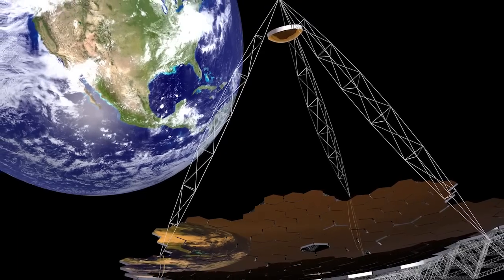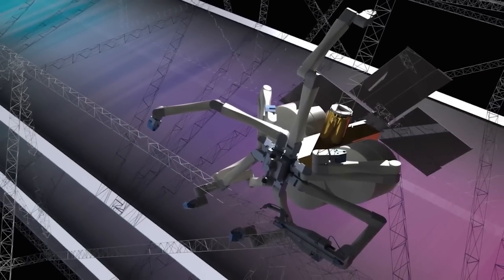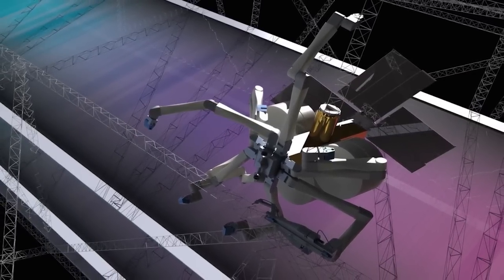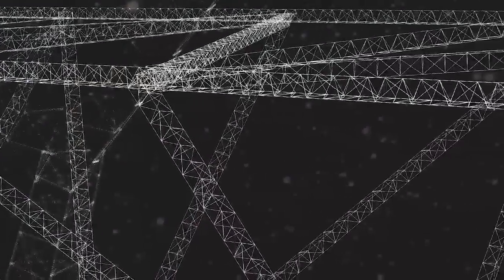So how are we actually going to do this? This is one concept that we put together for a mobile robot that has a number of robotic arms and can crawl around and build up a structure in space.